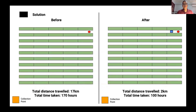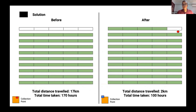Here's a simulation of how it looks before and after our solution. Before our solution, the worker has to go back and forth to the collection point, travelling a total of 17 kilometers, taking up a combined 170 man-hours to harvest one batch of crops. But with our solution, the worker stays at one point to harvest while the robot, highlighted by the blue box, goes back and forth. The worker now only has to travel two kilometers — almost 10 times less — and the total time is reduced to about 100 man-hours.